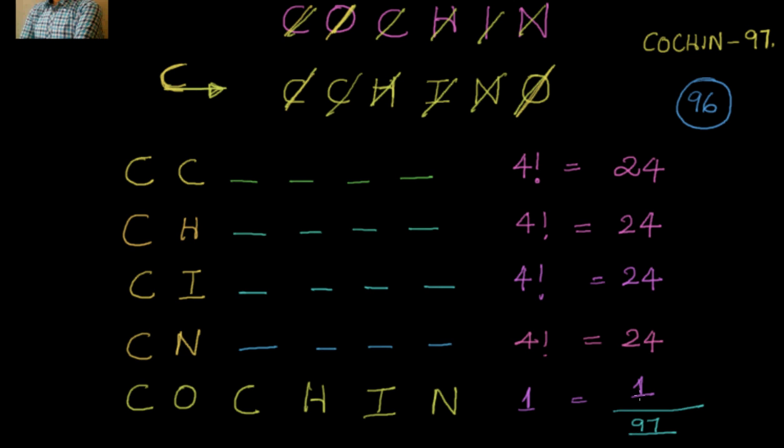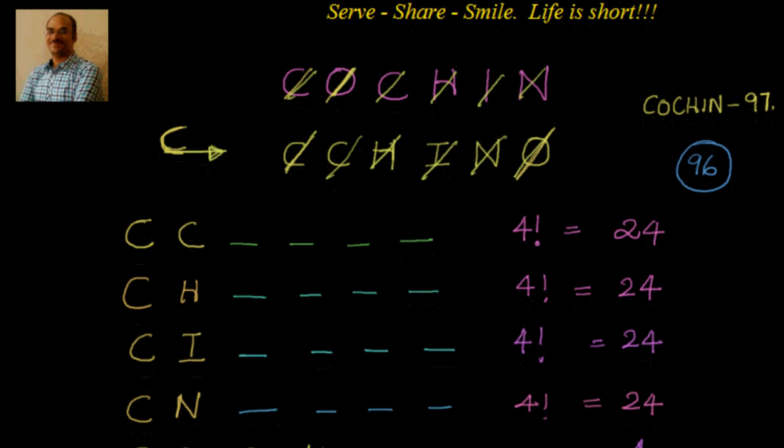So we have one word for COCHIN itself or the number of words before COCHIN are 96 or the rank of COCHIN is 97. That's one interesting example which I thought of sharing with you. Please do let me know your feedback. Thanks for your time and support. Keep smiling and sharing. Bye for now.